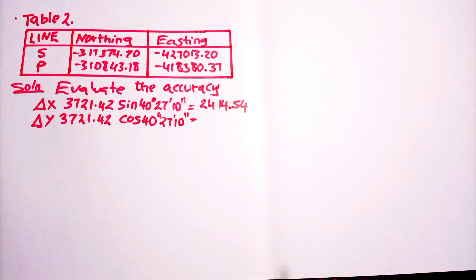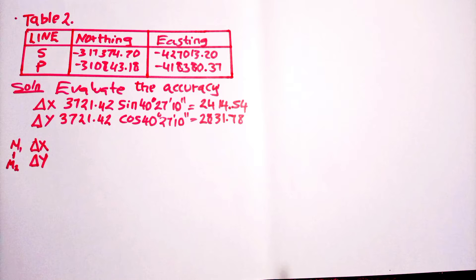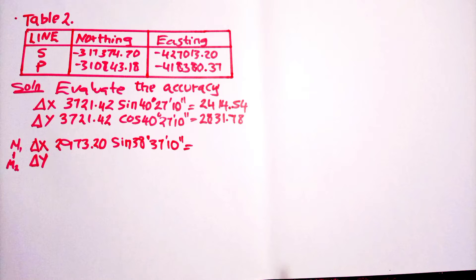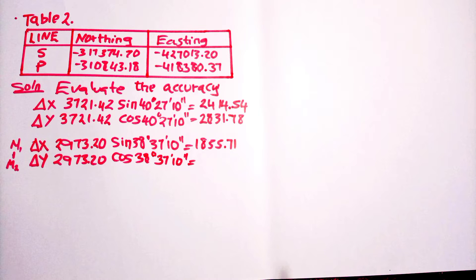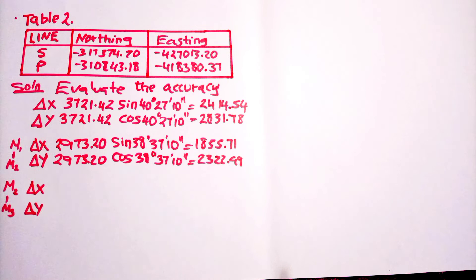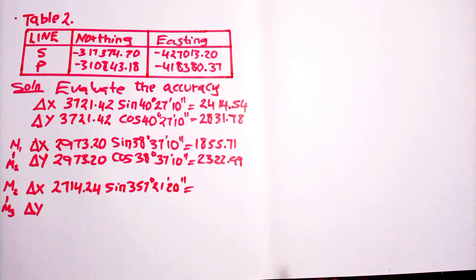We multiply the distance of line SM by sine theta to find the departure, and by cosine theta to find the latitude. For line M1 to M2, the departure is the length 2973.20 times sine 38 degrees 37 minutes 10 seconds. We do the same for M2 to M3 — multiply the distance from Table 1 by sine theta for departure and cosine theta for latitude.